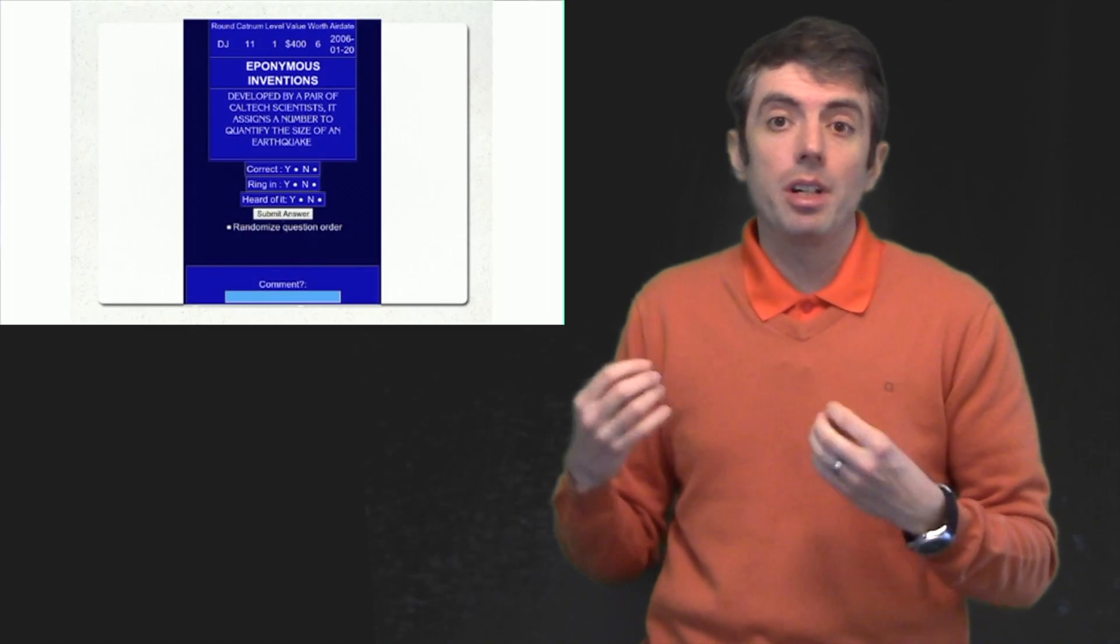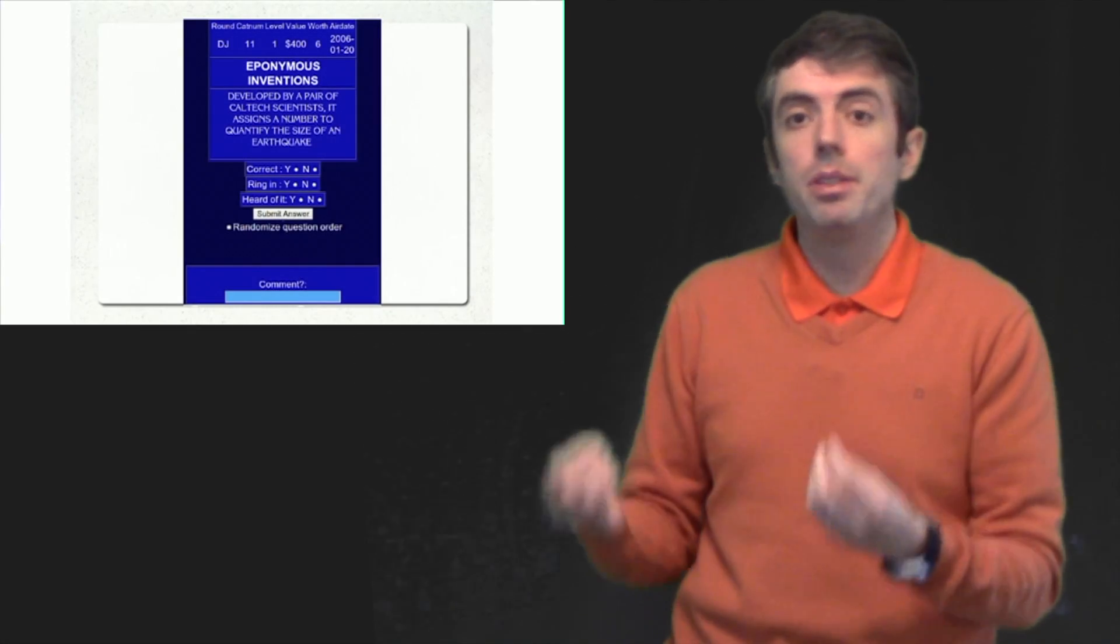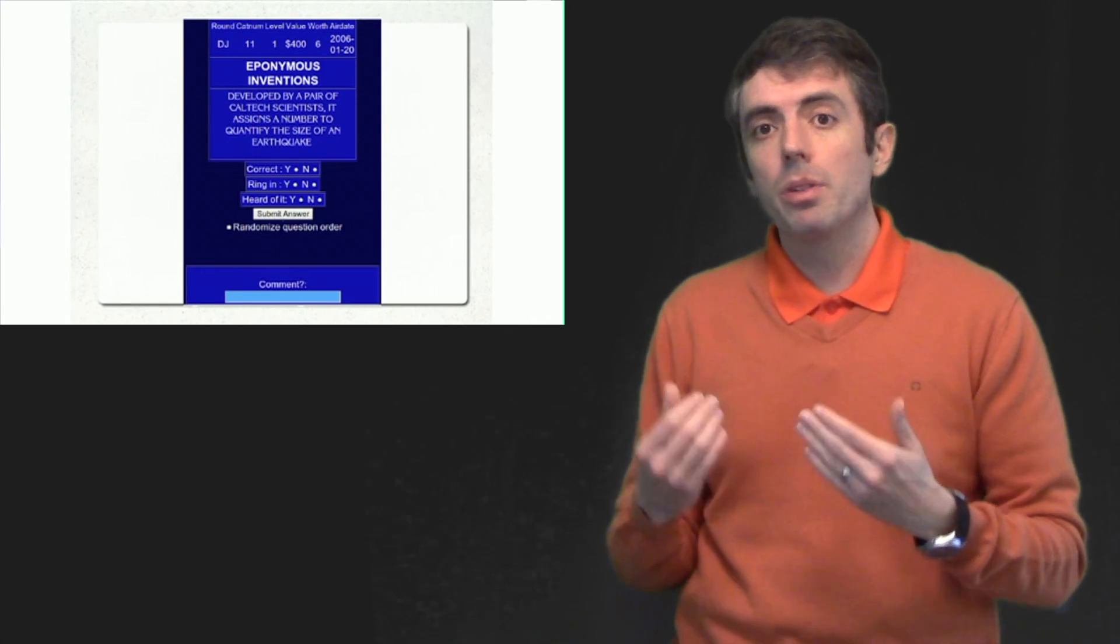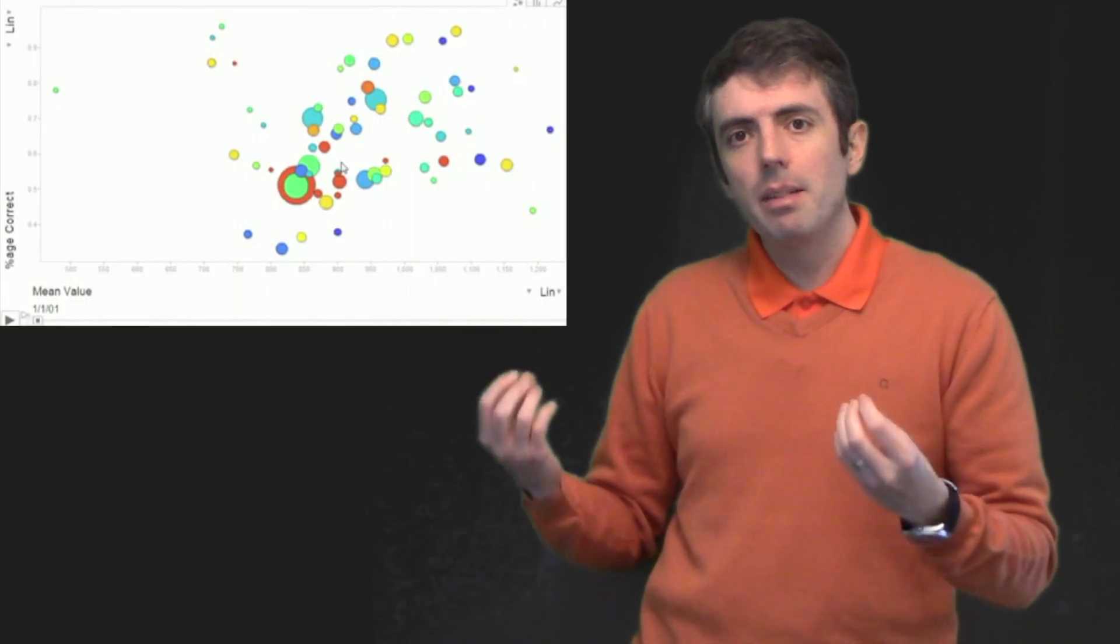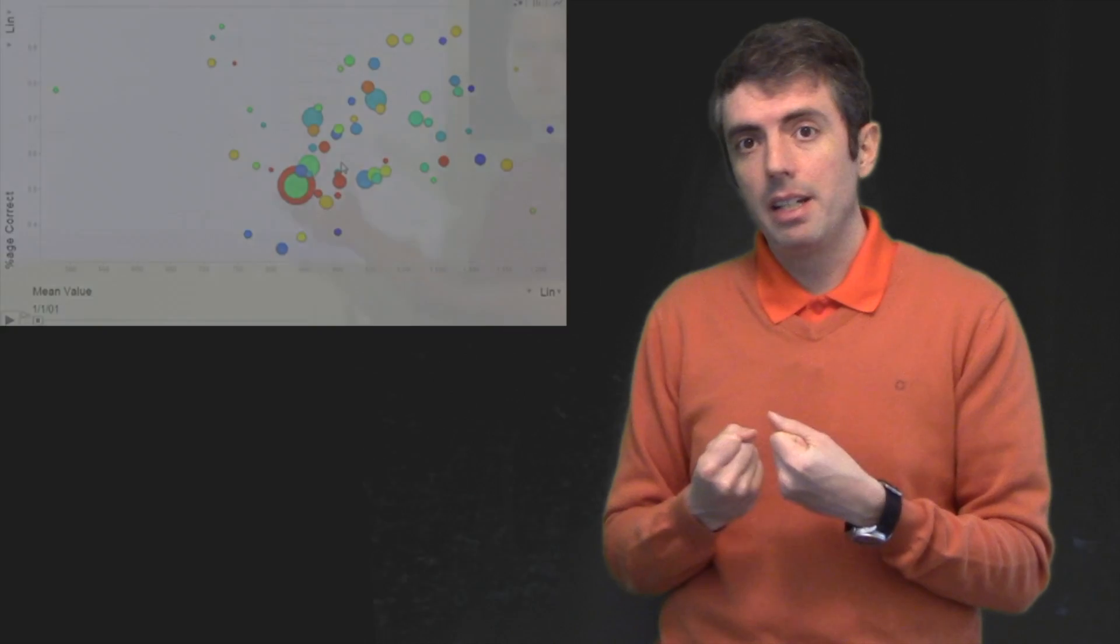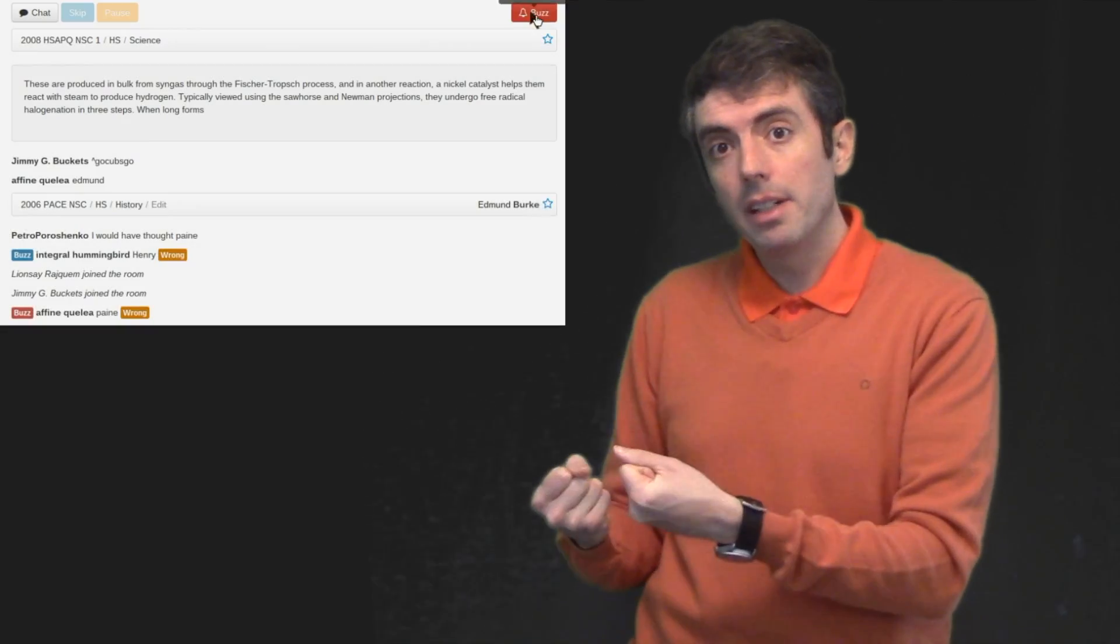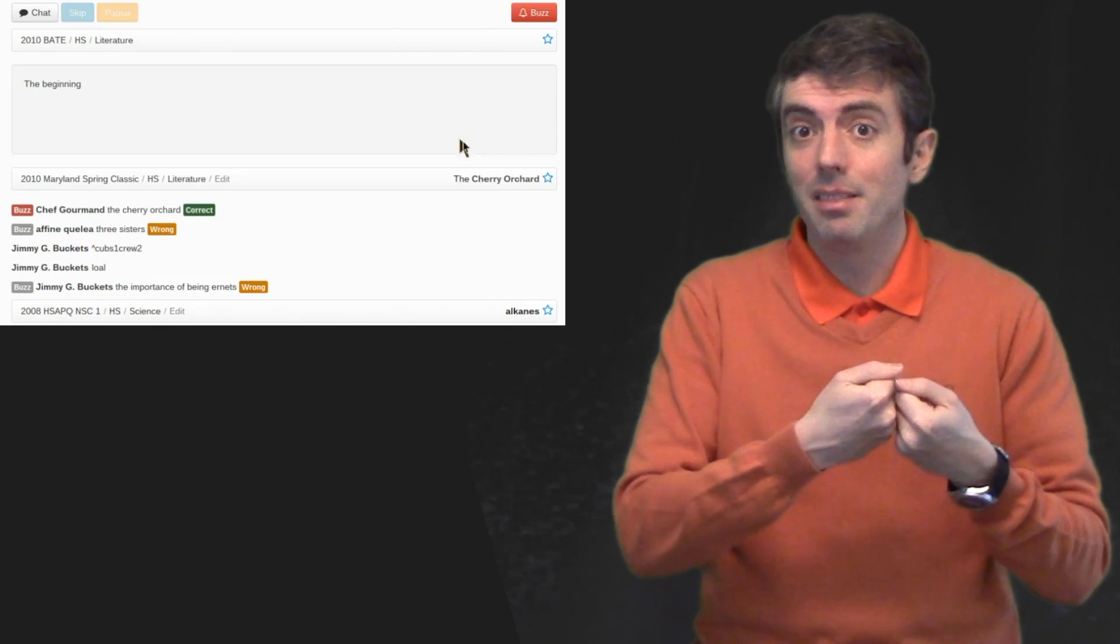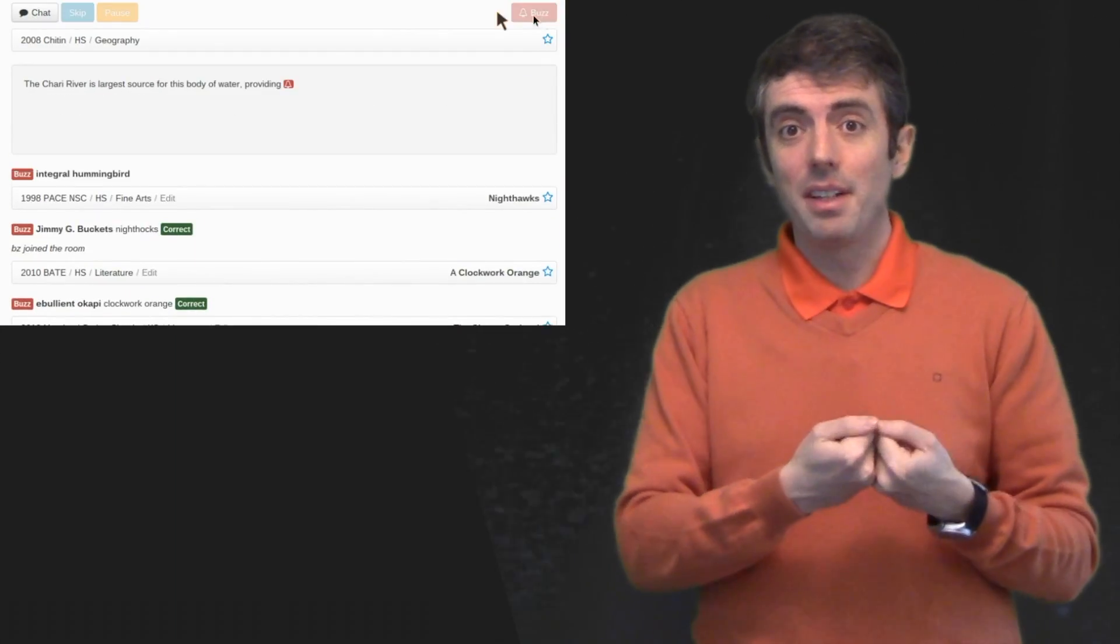The third video talks about the role of computers in trivia competitions, how computers can help people study, how computers can help organize competitions, and in general, talking about the symbiotic relationship between the trivia community and artificial intelligence researchers and people generally interested in doing fun stuff with computers.